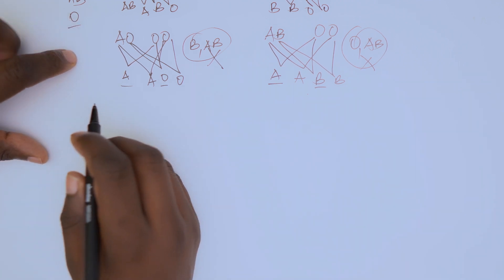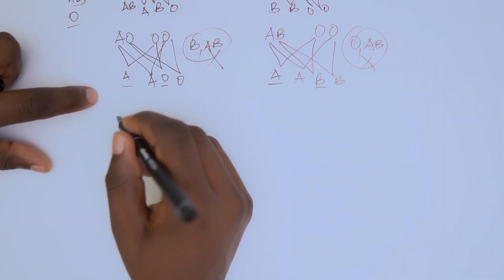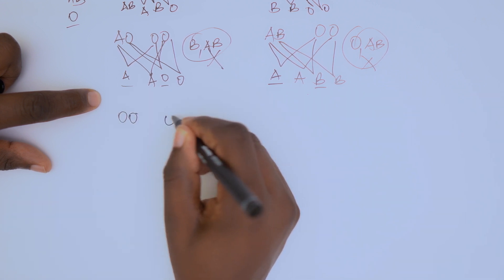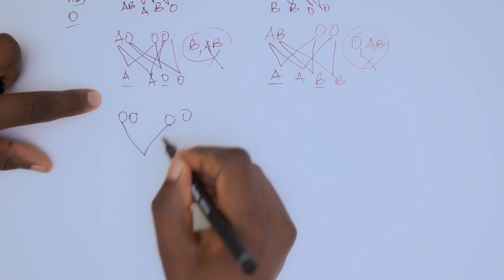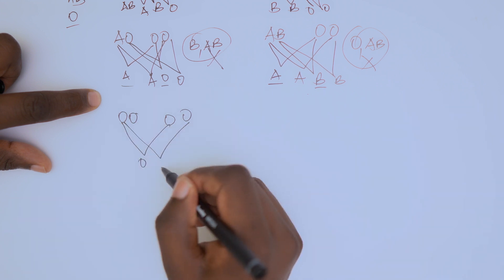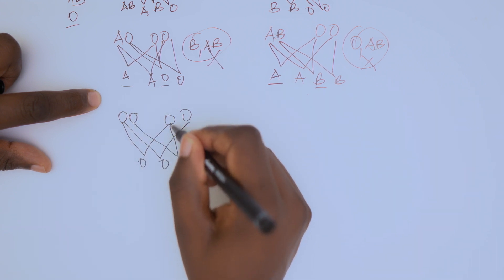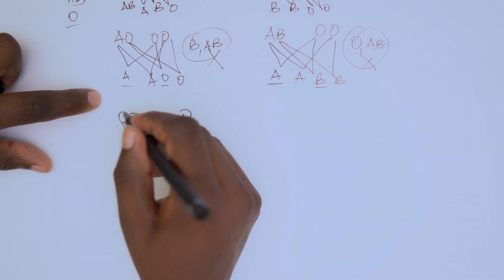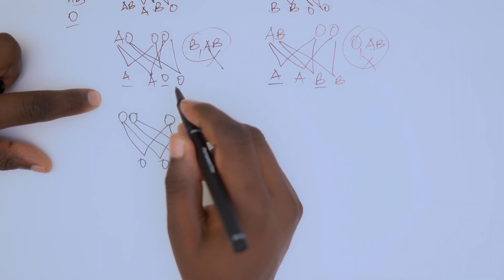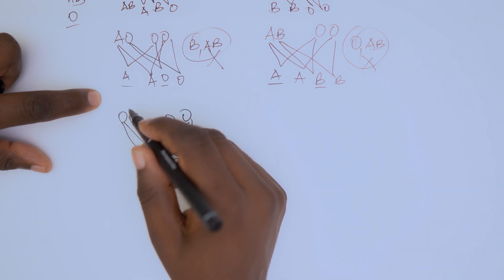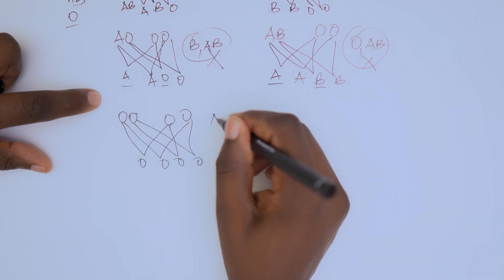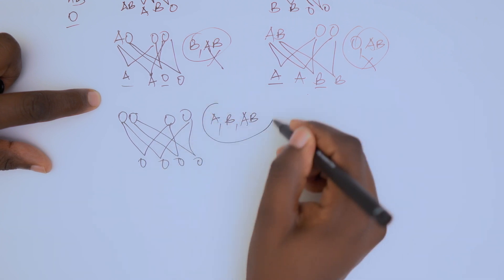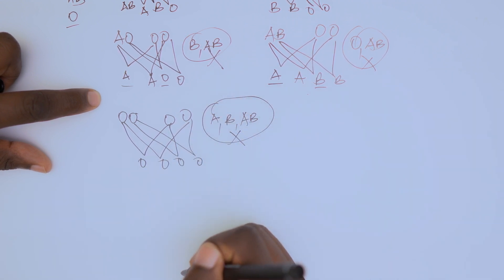Now let's look at O. If both partners are O — O, O crossed with O, O — you're only going to get O. In a family where both partners are O, you cannot find A, B, or AB. You're only going to get O.